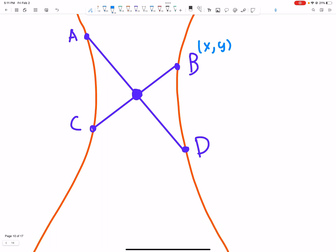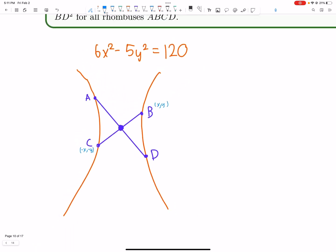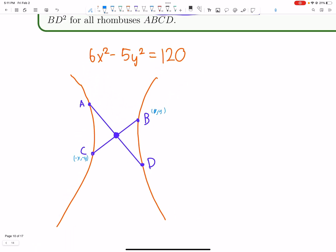Because the diagonals intersect at the origin, by symmetry, the opposite point D will be at (-a,-b). If point (a,b) lies on the hyperbola, we know 6a² - 5b² = 120.